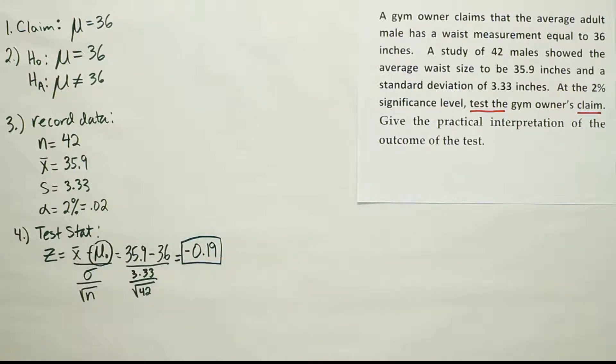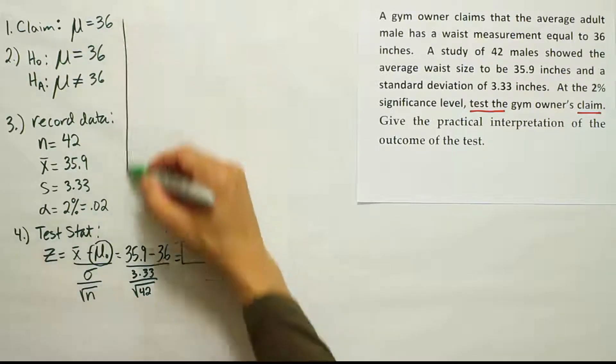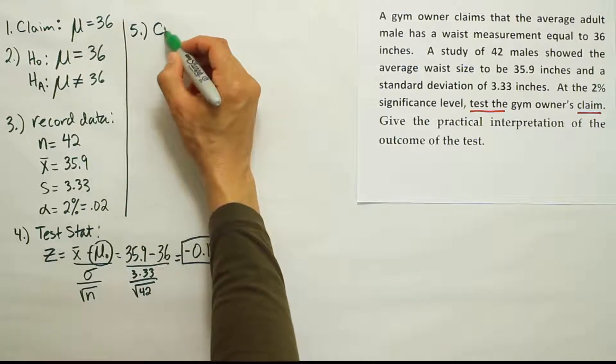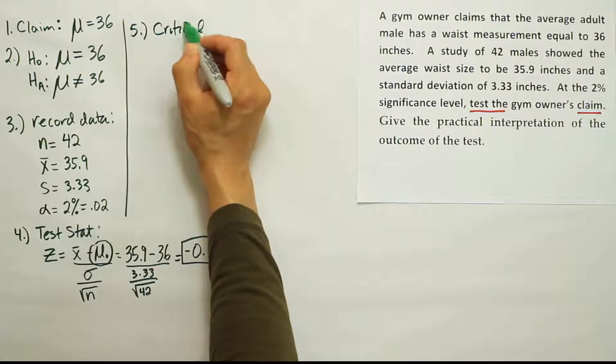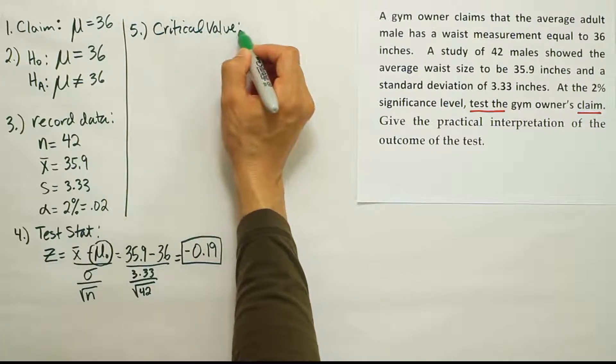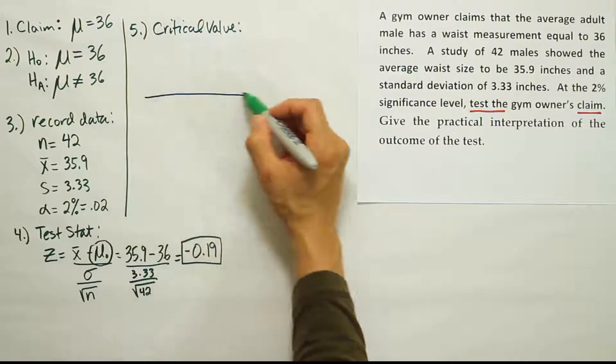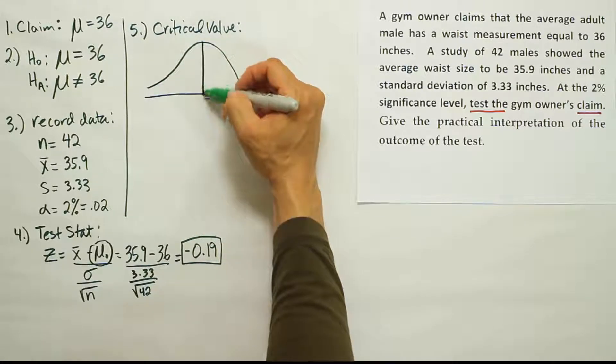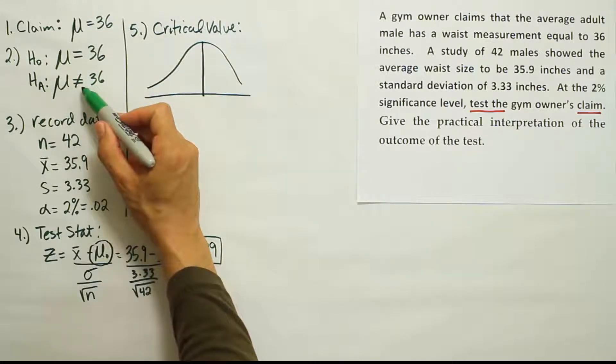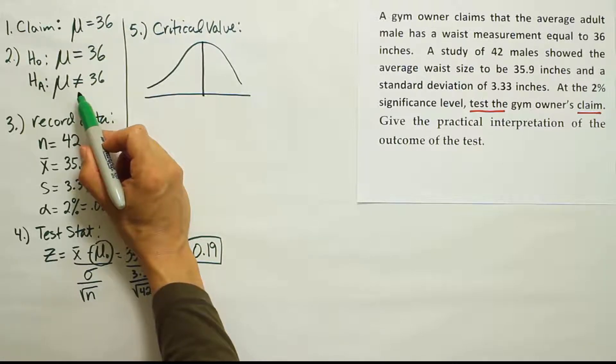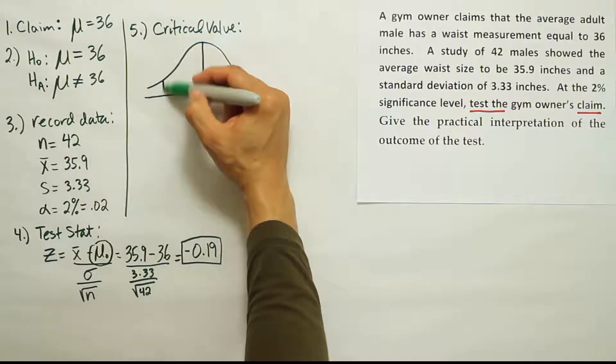Okay, that's not a very extreme test stat, right? It's very close to zero. It'll be certainly a test stat that's not going to allow us to reject H0. But just to confirm that, we want to go ahead and do the critical value step, right? So step five, the critical value. Okay, so we draw a bell curve. We look at HA and determine, based on that symbol, whether it's left-tailed, right-tailed, or two-tailed. Remember, less than means left-tailed. Greater than means right-tailed. Not equal means two-tails.